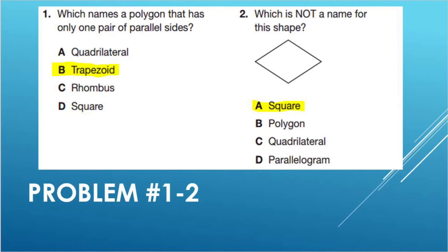For number two, our answer is square. This shape is not a square because we do not have four right angles and four equal sides.